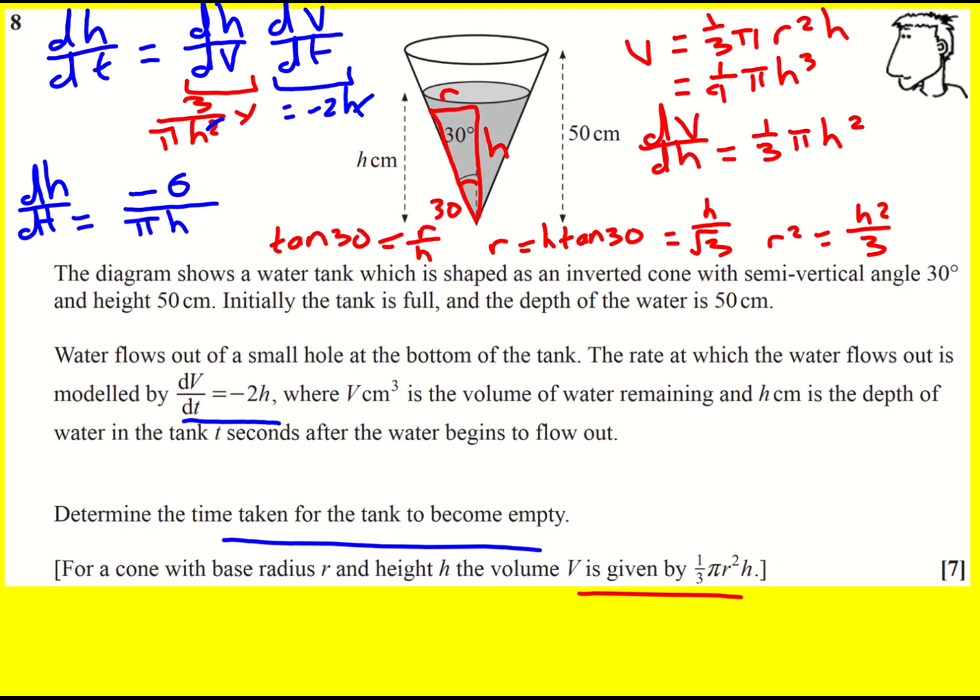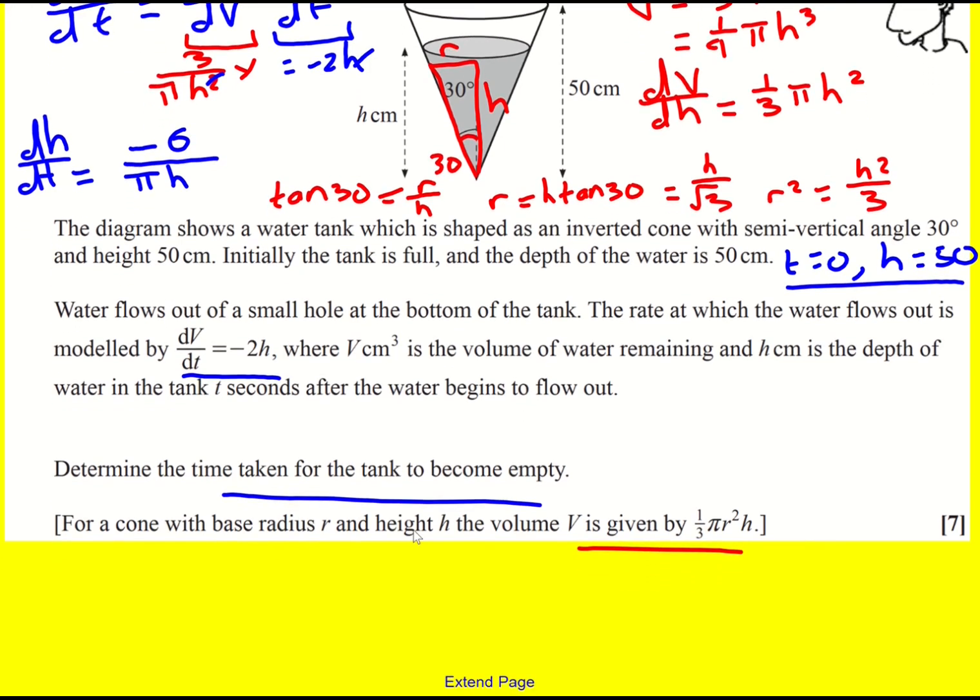Let's just say one thing I've not said yet, and I probably should have done this right at the start. But when T is equal to zero, the depth of the water, that's the height, is going to equal 50. So I've got a condition here that's going to allow me to work out my integration constant at some point.